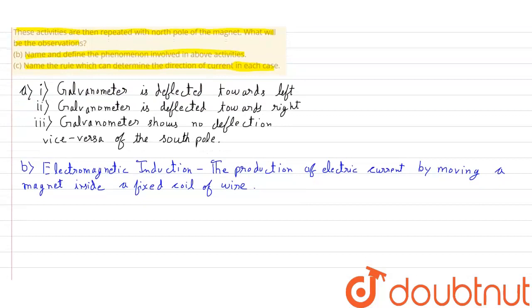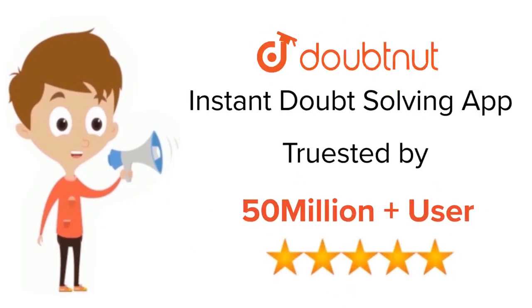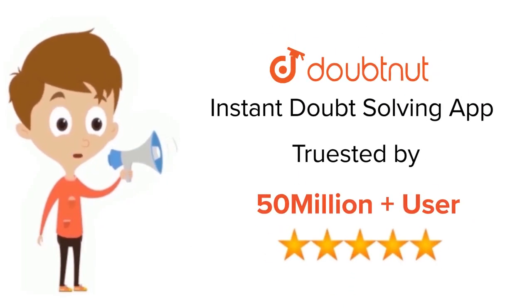In Question C, we have been asked to name the rule which can determine the direction of current in each case. The rule is Fleming's right hand rule. Fleming's right hand rule can determine the direction of current in each of the above cases. Thank you. For class 6 to 12, IIT and NEET level — trusted by more than 5 crore students. Download DoubtNet today.